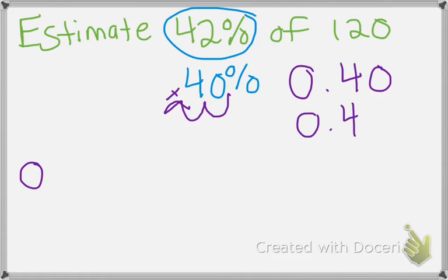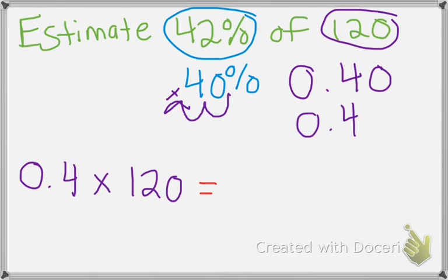So we're going to take that 0.4, and then we're still going to multiply it by 120. And when you multiply 0.4 times 120, you get 48 again. So you can use a fraction form or a decimal form, you'll get the same answer. So your answer, again, is going to be approximately 48.